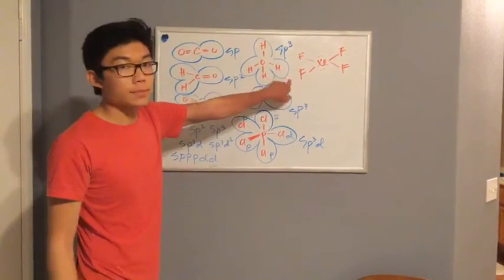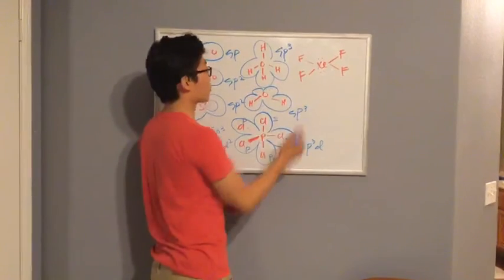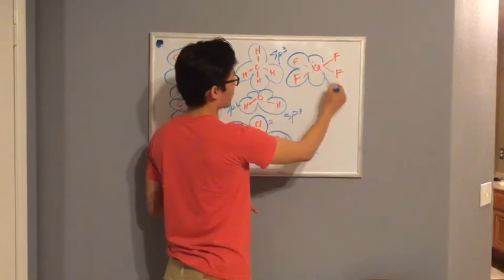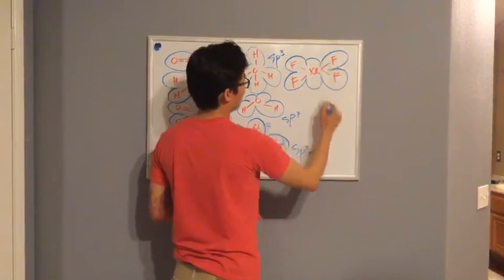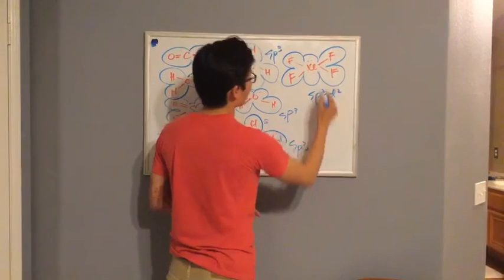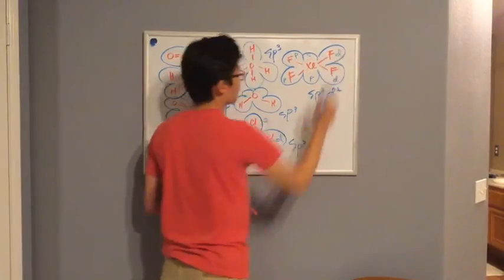Here, we have the last molecule, the octahedral geometry. Count the lone pair and single bond. Looking at the center atom, s, p, 2, 3, d1, d2. So this is s, p, p, p, p, d, d.